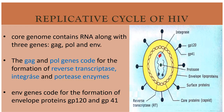The core genome contains RNA along with three genes: gag, pol, and env. The gag and pol genes code for formation of reverse transcriptase enzyme, integrase, and protease enzyme. The env gene is responsible for formation of glycoprotein 120 and glycoprotein 41.